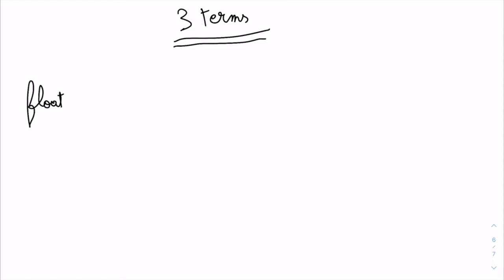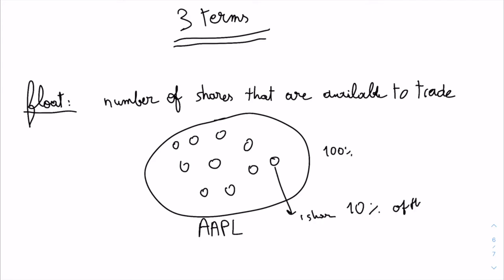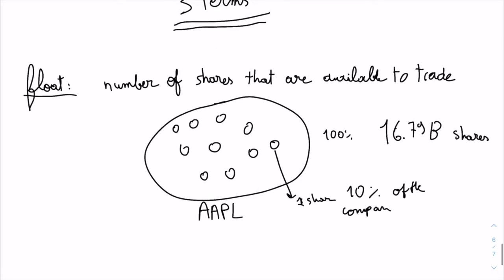The first one is float. Float is basically the number of shares that are available for a company to trade. Let's take for example, the float of Apple is 10. That means Apple has 10 shares, and each share represents 10% of the company. In reality, it has 16.79 billion shares.